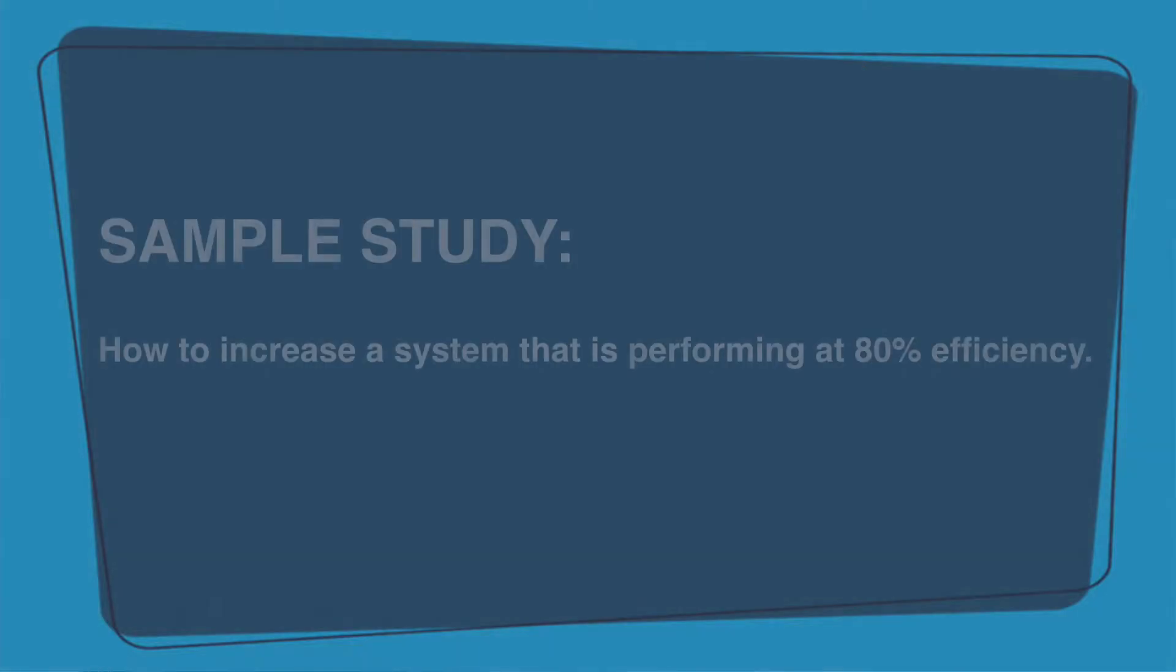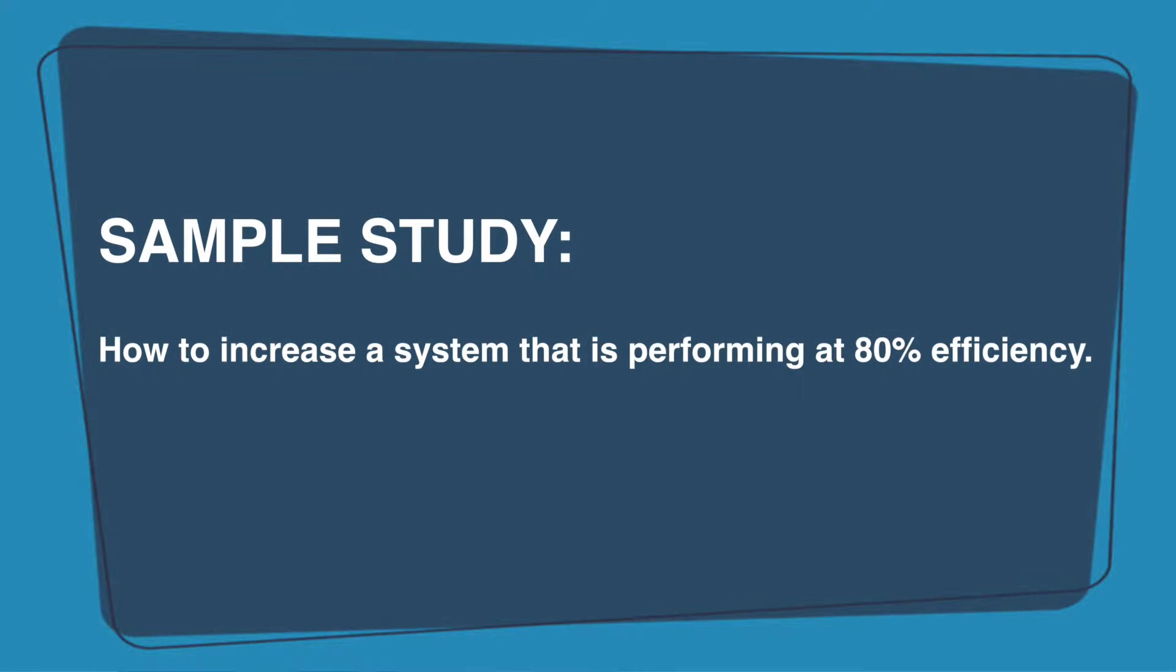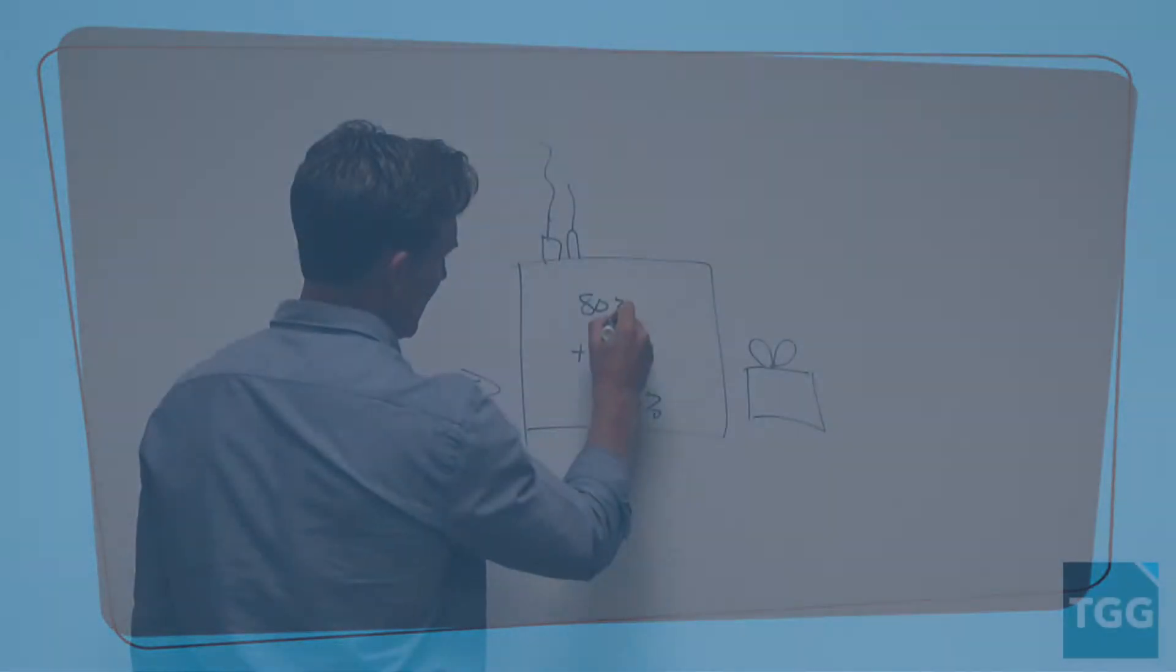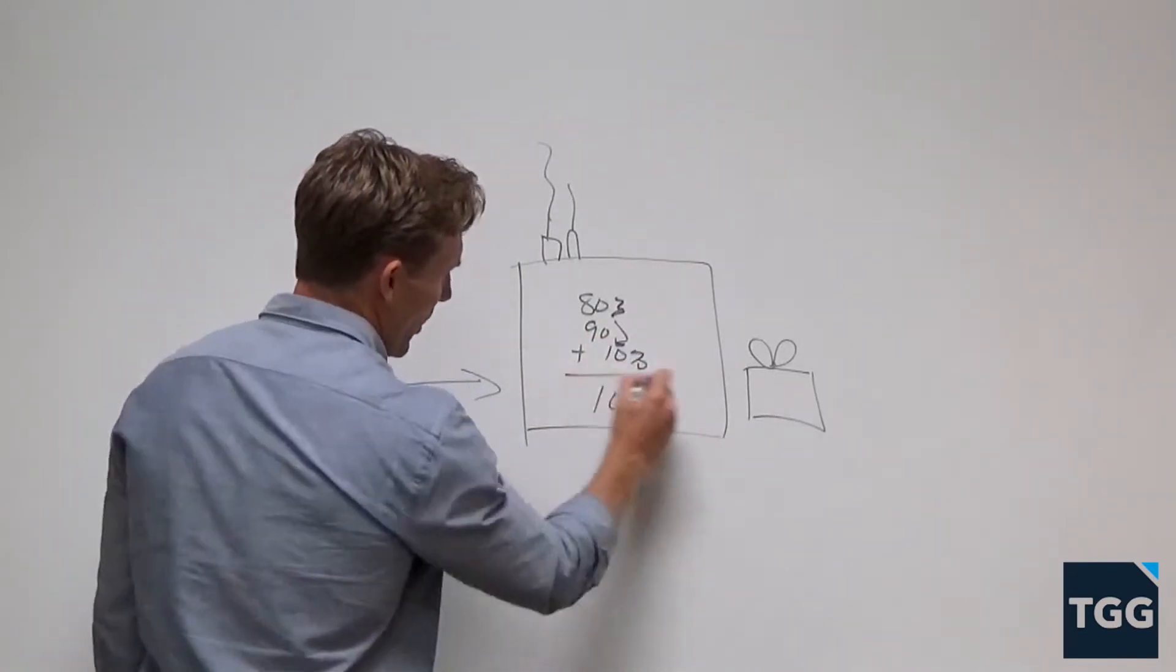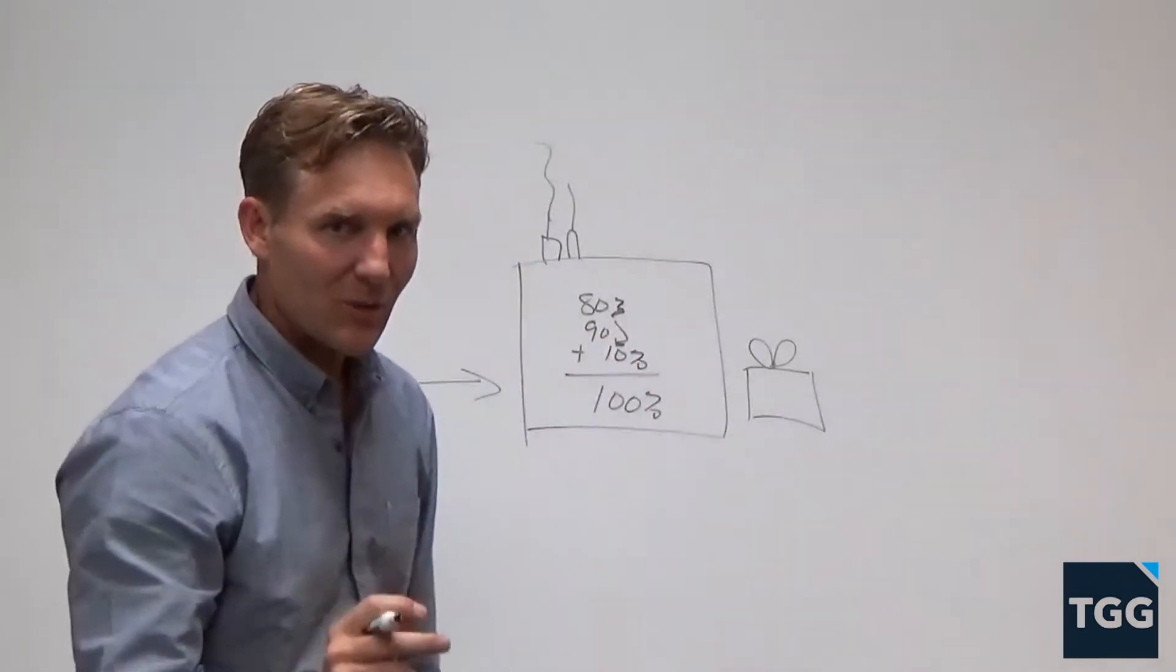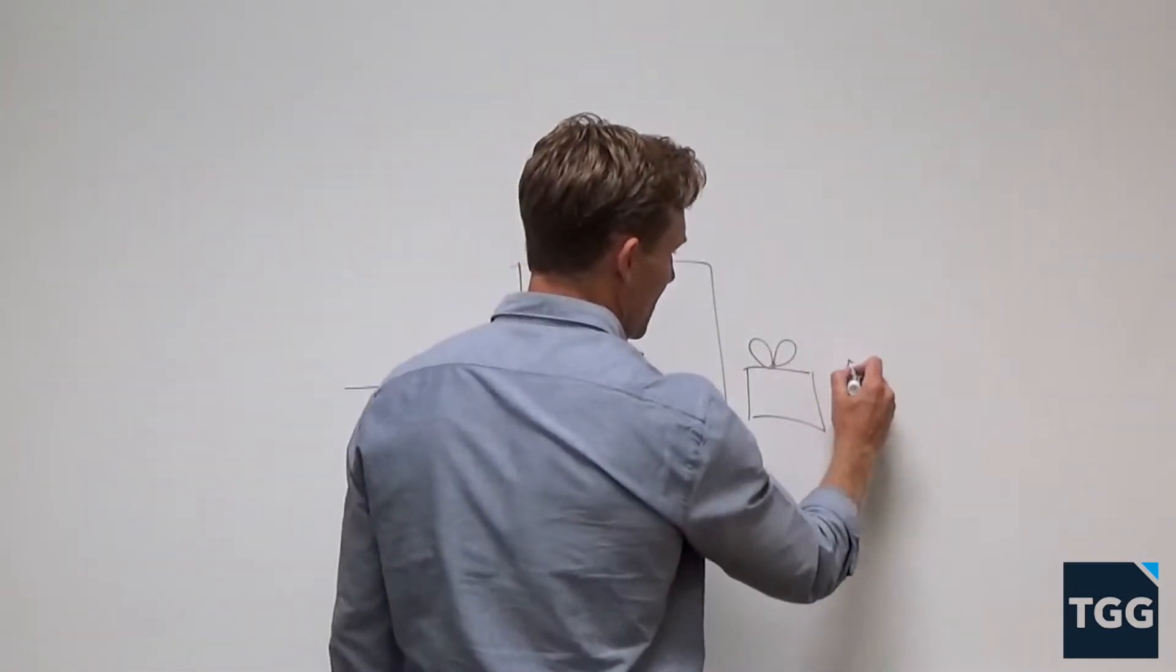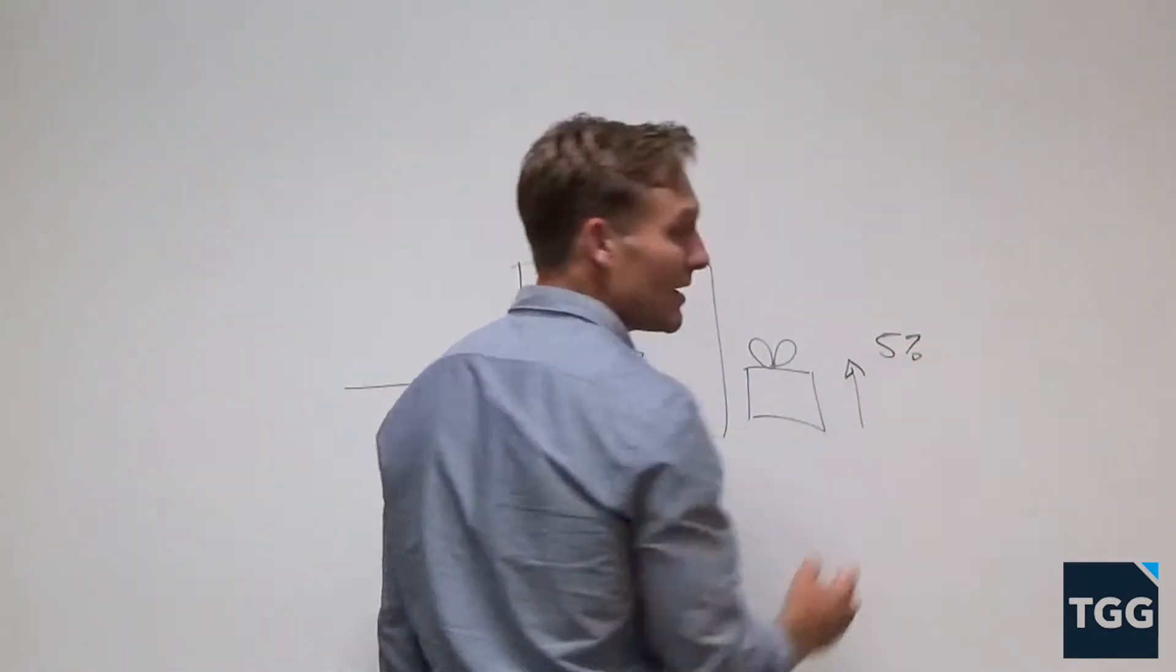What happens if we can increase this by 10%, if we can go from say 80% to 90%? On a 50% gross margin item, we will improve our gross profit by 5%.